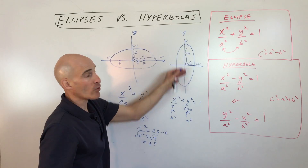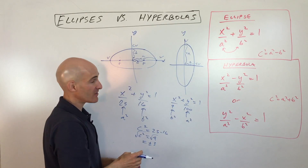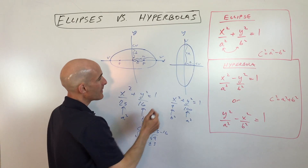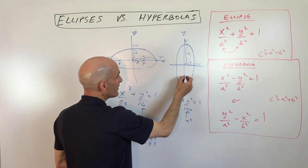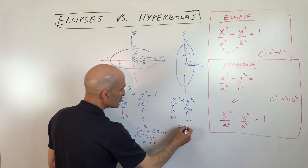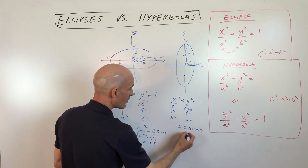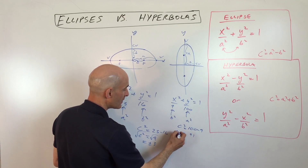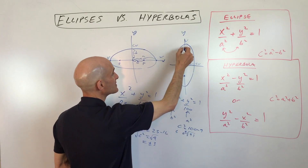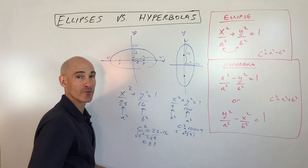For a vertically oriented ellipse, since the number underneath y squared is larger than the number underneath x squared, this is the major axis and this is the minor axis. The foci lie along the major axis. We do c squared equals a squared minus b squared, which comes out to 91. Taking the square root, we get plus or minus the square root of 91 — those are the foci.